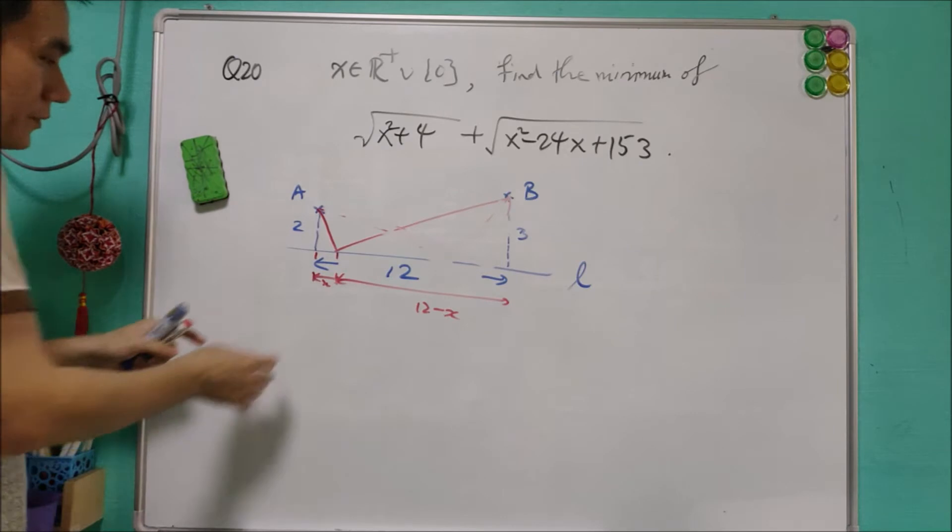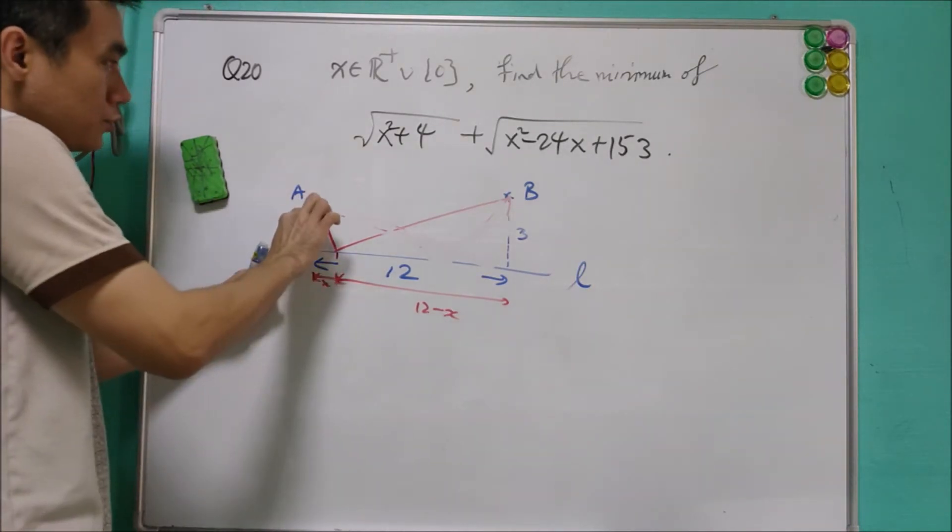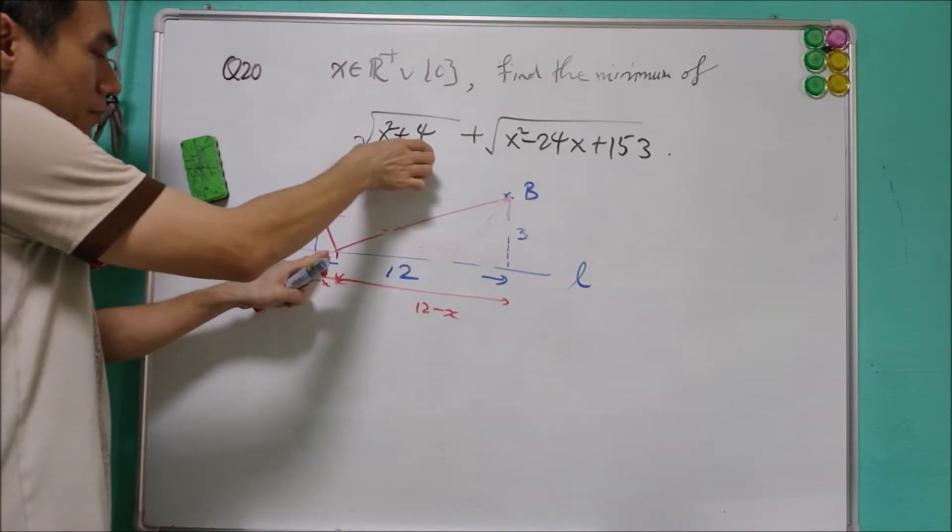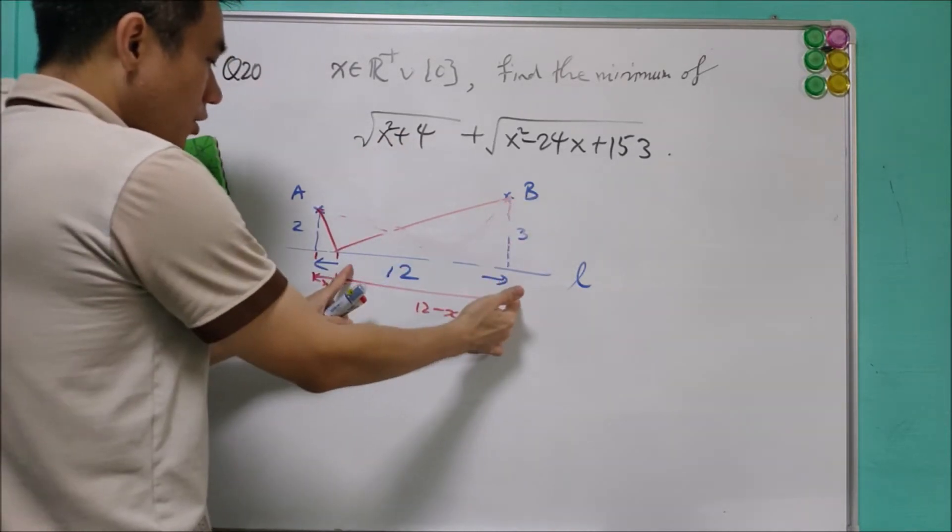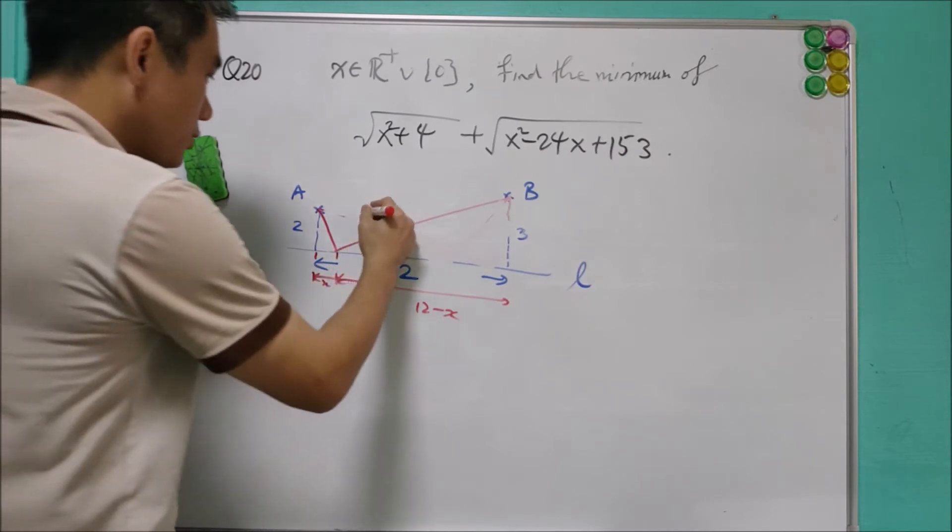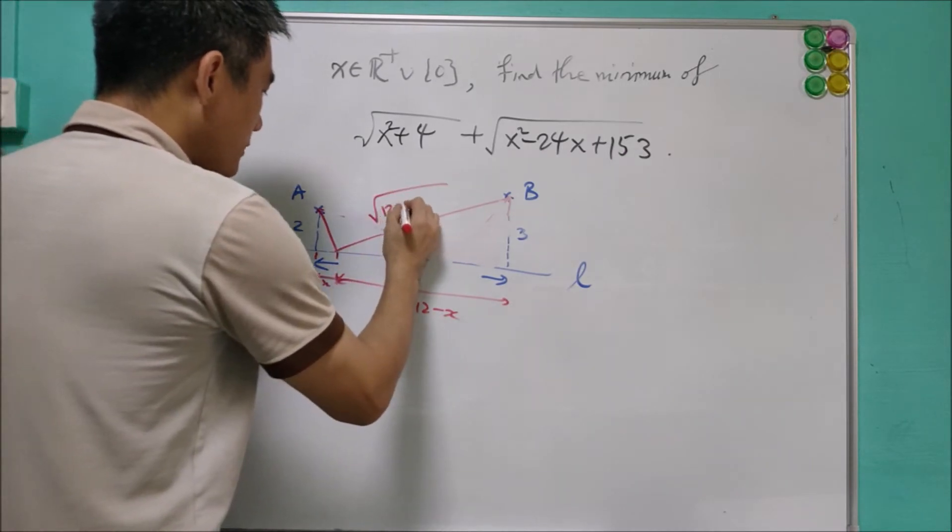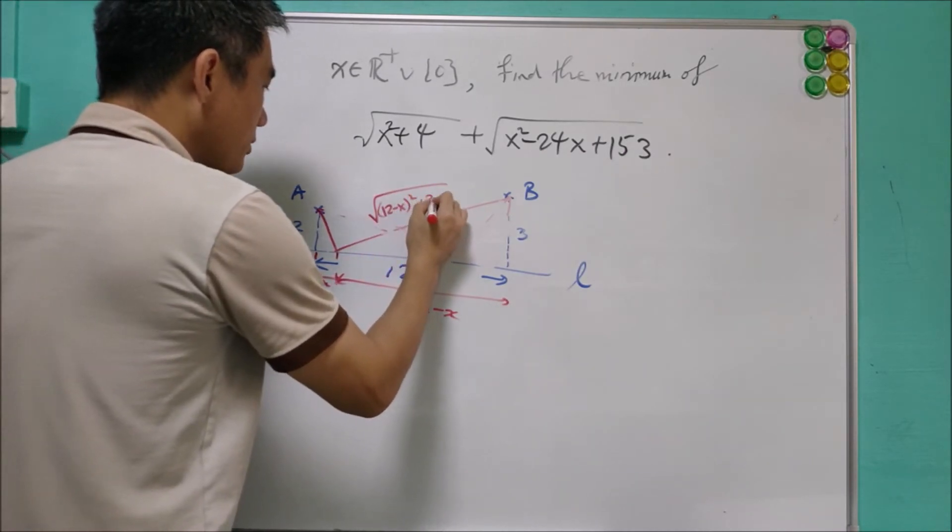So with Pythagorean Theorem, then we know that this is x, this is 2, this will be square root of x squared plus 2 squared. Right? This is 3, this is 12 minus x, and this will equal to square root of (12 minus x) squared plus 3 squared.